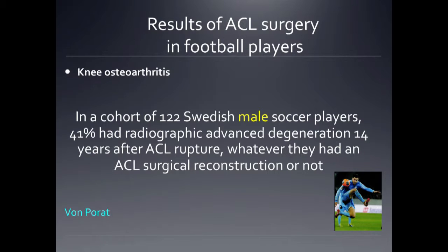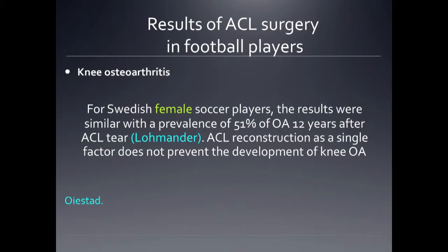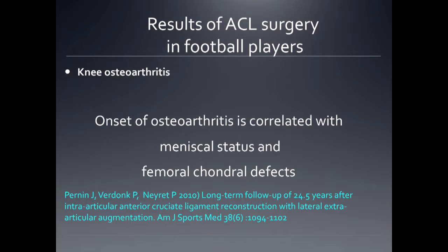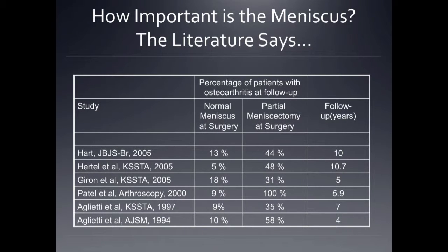Data from a Swedish cohort found that males are likely to develop osteoarthritis whatever the management — conservative or surgical. The same findings were reported by Lomander concerning females. The onset of osteoarthritis is correlated to the status of the meniscus, so the idea is to preserve the meniscus and operate before meniscal lesions develop. Our long-term follow-up data presented at AGSM confirmed that osteoarthritis onset is directly correlated to the meniscal status at surgery.